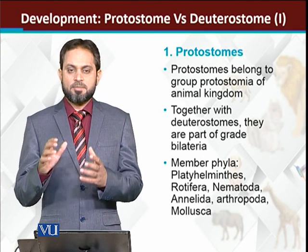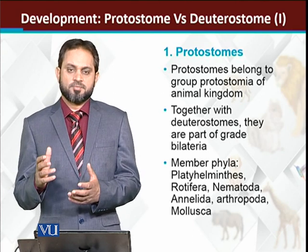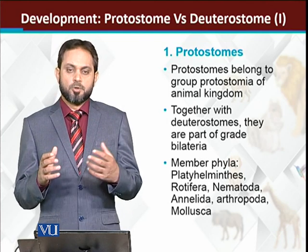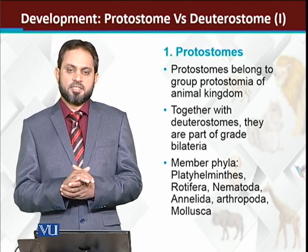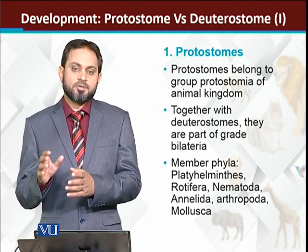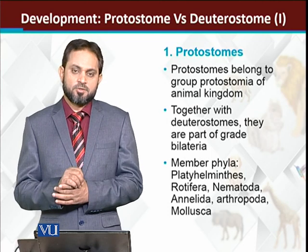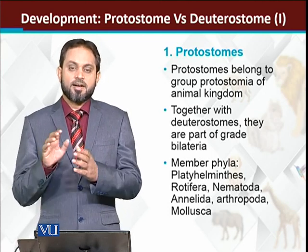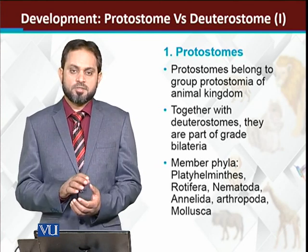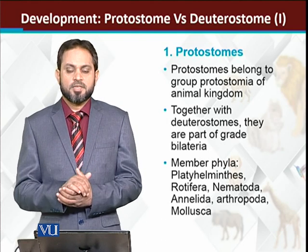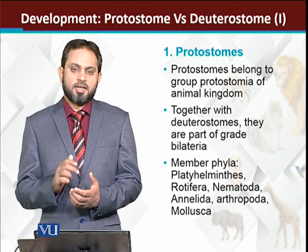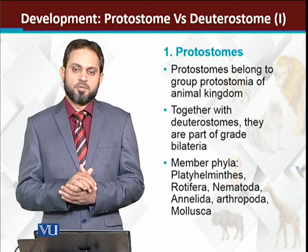Grade Bilateria is the larger one. Only a few phyla like coelenterates, which are diploblastic and have radial symmetry, fall in grade Radiata. But most of the animal phyla are included in grade Bilateria. Grade Bilateria کو further دو بڑے groups میں divide کیا جاتا ہے: one is the protostomes and the other one is the deuterostomes.